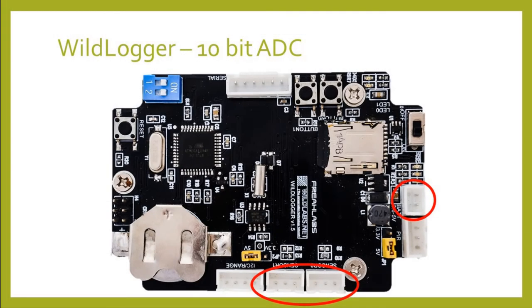Now that we've gone through how an analog-to-digital converter works, this brings us to the wildlogger. The wildlogger has a 10-bit ADC, and if you remember, that means it has 2 to the 10 quantization levels, or it divides the voltage range, 3.3 volts, up into 1,024 equal levels.